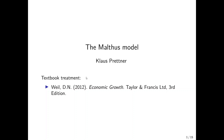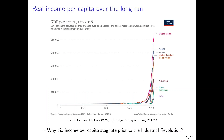This chapter deals with the Malthus model and the question why income per capita stagnated prior to the Industrial Revolution. A good textbook treatment can be found in the book by David Weil, Economic Growth, published by Taylor and Francis in 2012. We are already familiar with this graph from the chapter on the stylized facts of economic growth. It is taken from Our World in Data, a very interesting website where you can find a lot of interesting cross-country data on economic development.